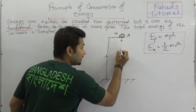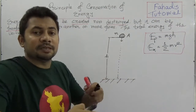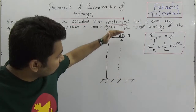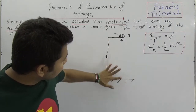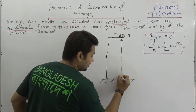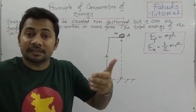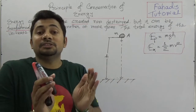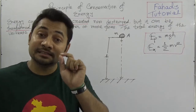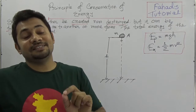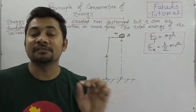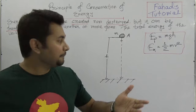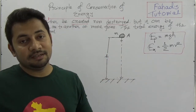When the object starts to fall, in every moment there will be a transformation. As it falls down, the kinetic energy will be increasing and the potential energy will be decreasing, but the summation of these two energies will remain the same. This is the main part of this video, because this type of mathematics is very common in exam papers, especially for English version students.